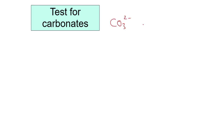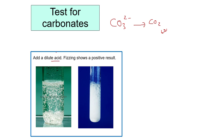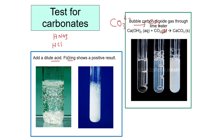For the carbonate test, it produces carbon dioxide gas, which turns clear lime water milky or cloudy. We need to add an acid to the carbonate sample to produce CO2 gas — for example, dilute HCl or dilute HNO3. After adding the acid to a sample containing carbonate, effervescence (fizzing) occurs, indicating a positive result. The CO2 produced then reacts with lime water to form calcium carbonate, turning it milky or cloudy.